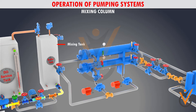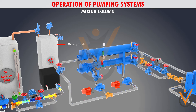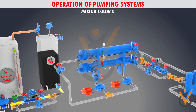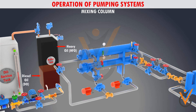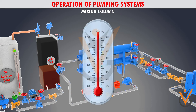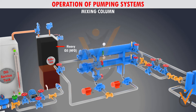The prime purpose of the mixing column is to produce a gradual variation of fuel quantity during the changeover period. It achieves the changeover by mixing both diesel oil and heavy oil. Changing from HFO to DO takes time because they are at different temperatures, so we cannot directly supply diesel oil to the main engine. The black color shows HFO and the brown color shows diesel oil.